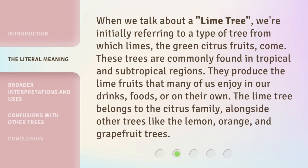When we talk about a lime tree, we're initially referring to a type of tree from which limes — the green citrus fruits — come. These trees are commonly found in tropical and subtropical regions. They produce the lime fruits that many of us enjoy in our drinks, foods, or on their own. The lime tree belongs to the citrus family, alongside other trees like the lemon, orange, and grapefruit trees.